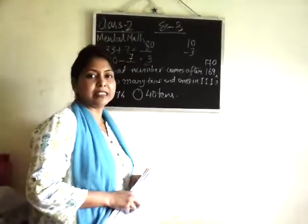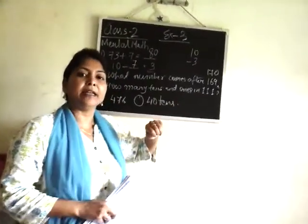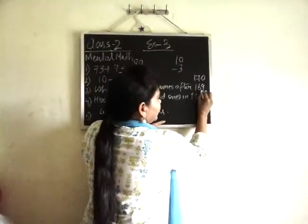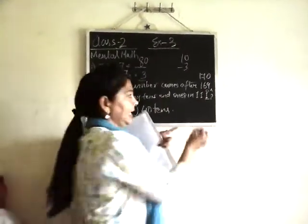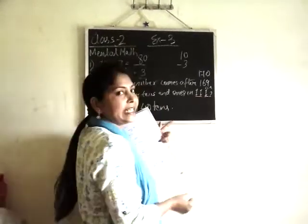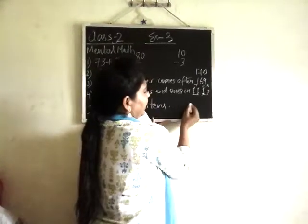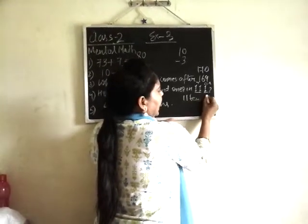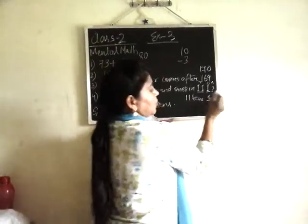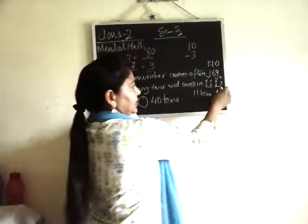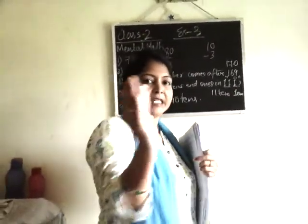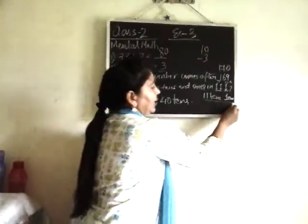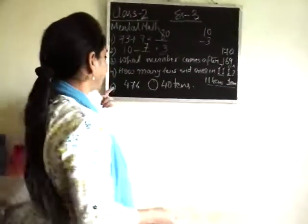How many tens and ones are there in 111? The last digit will be in the ones place. The rest will be in the tens place. So we have 11 tens and 1 one.